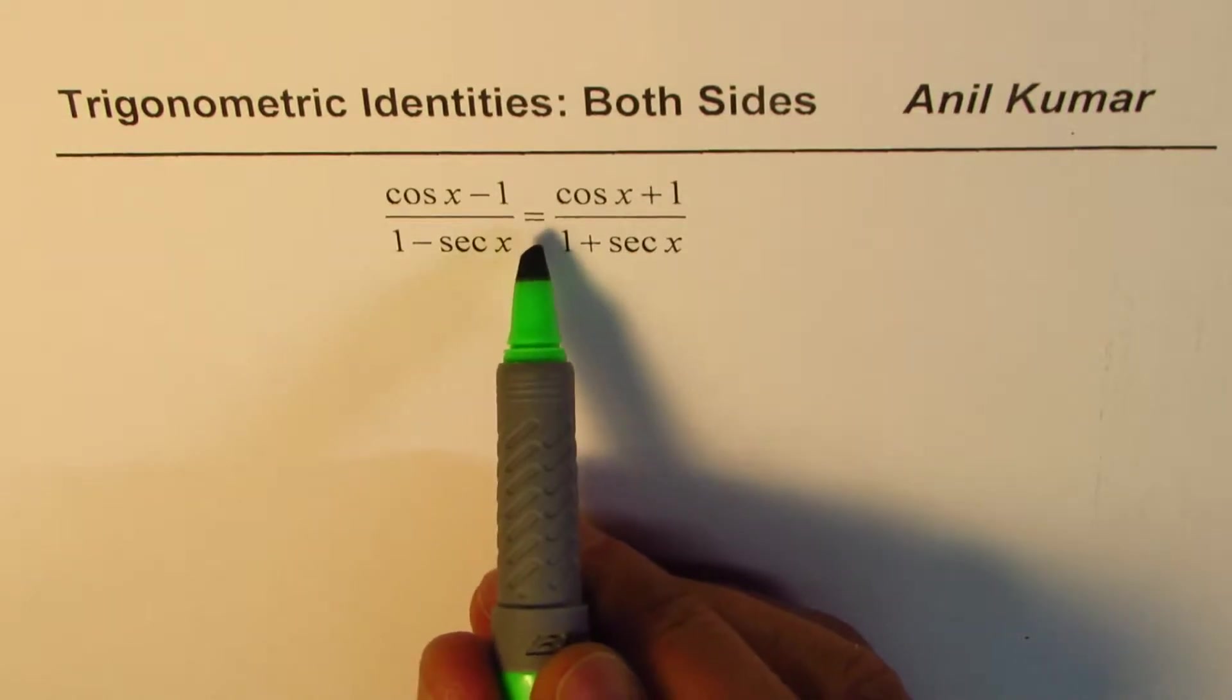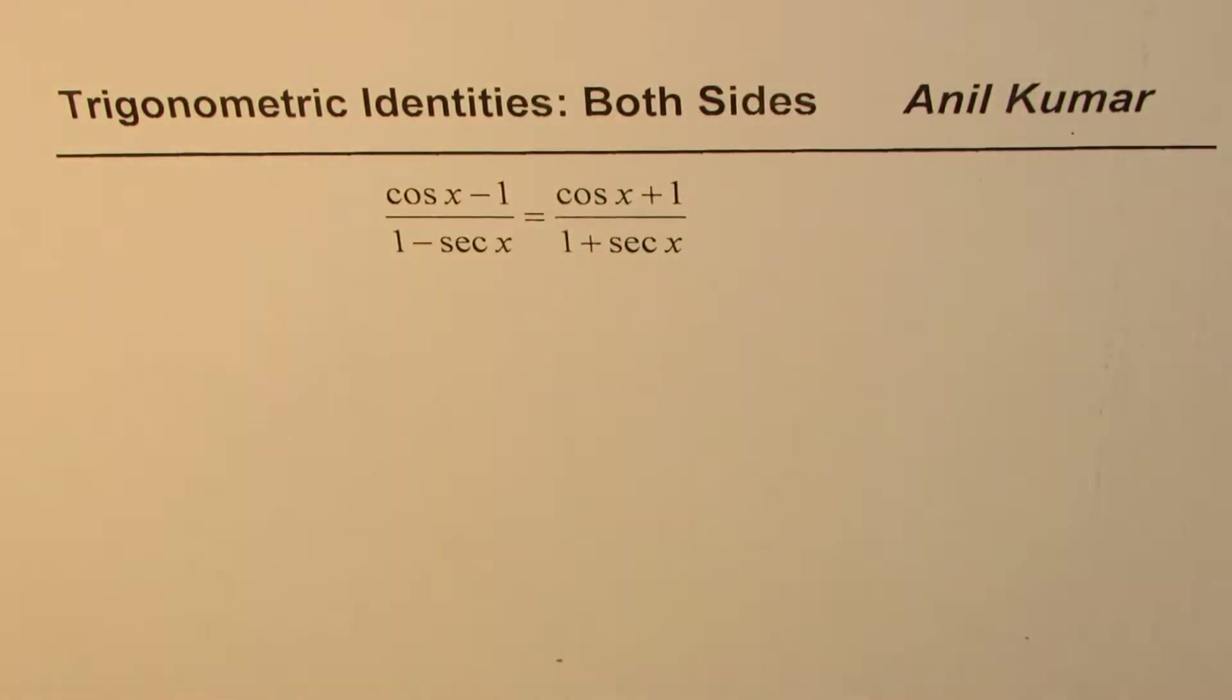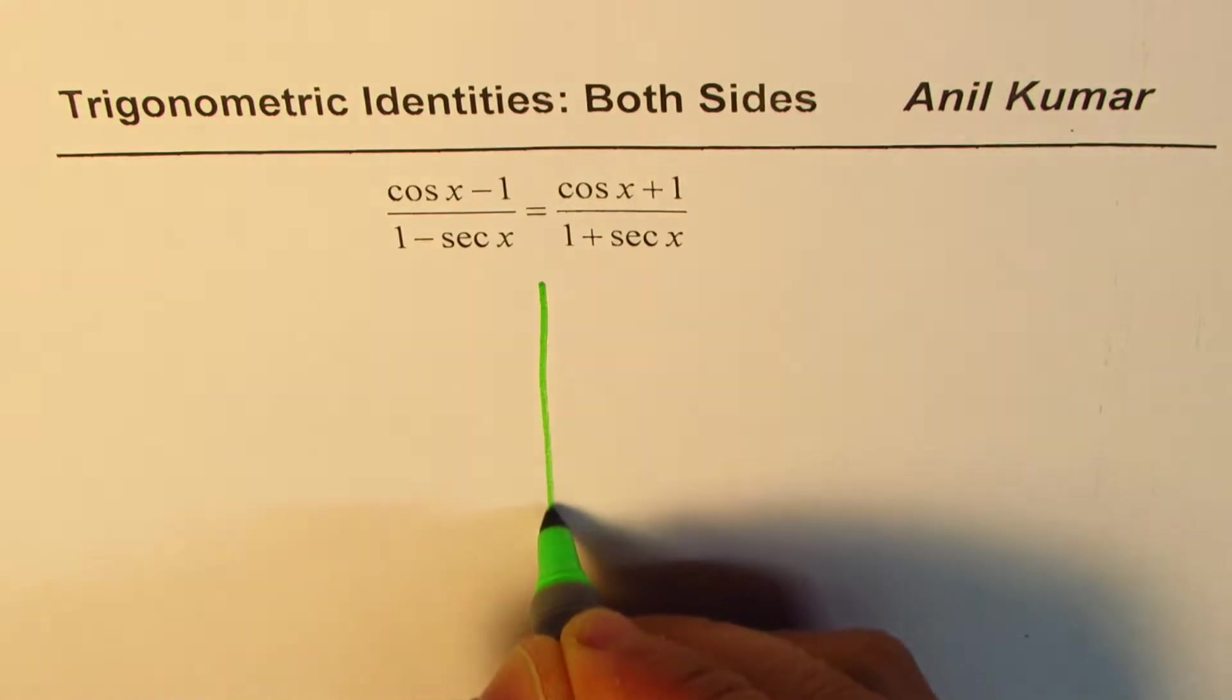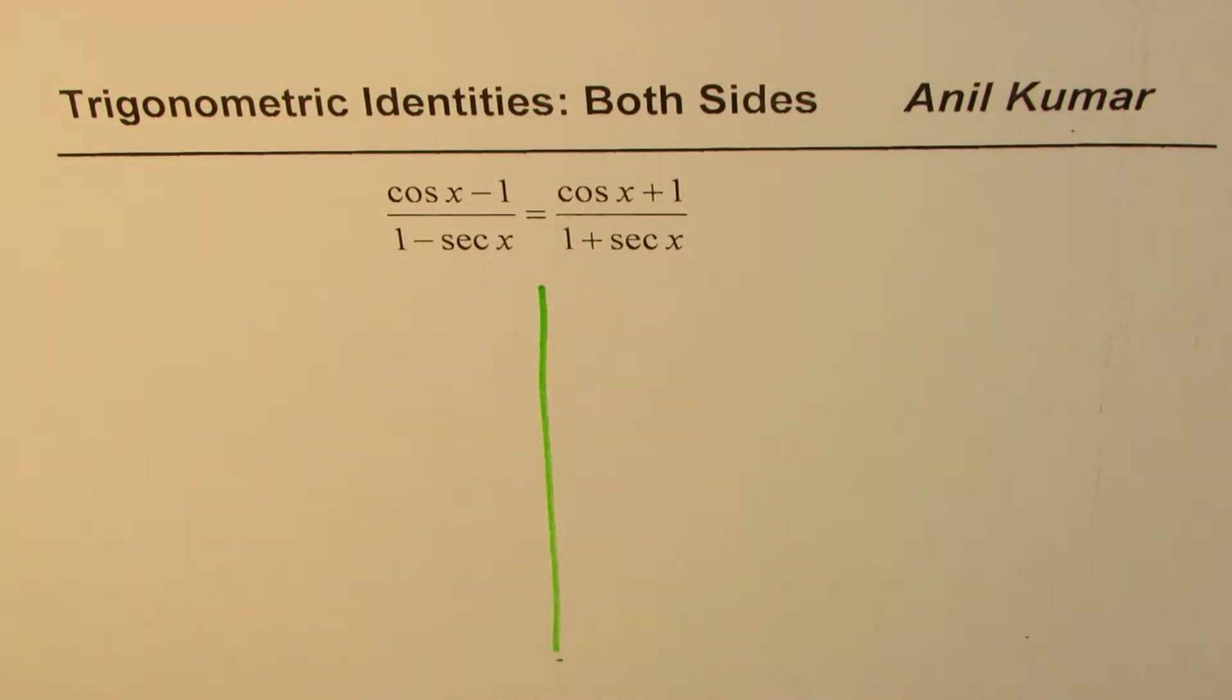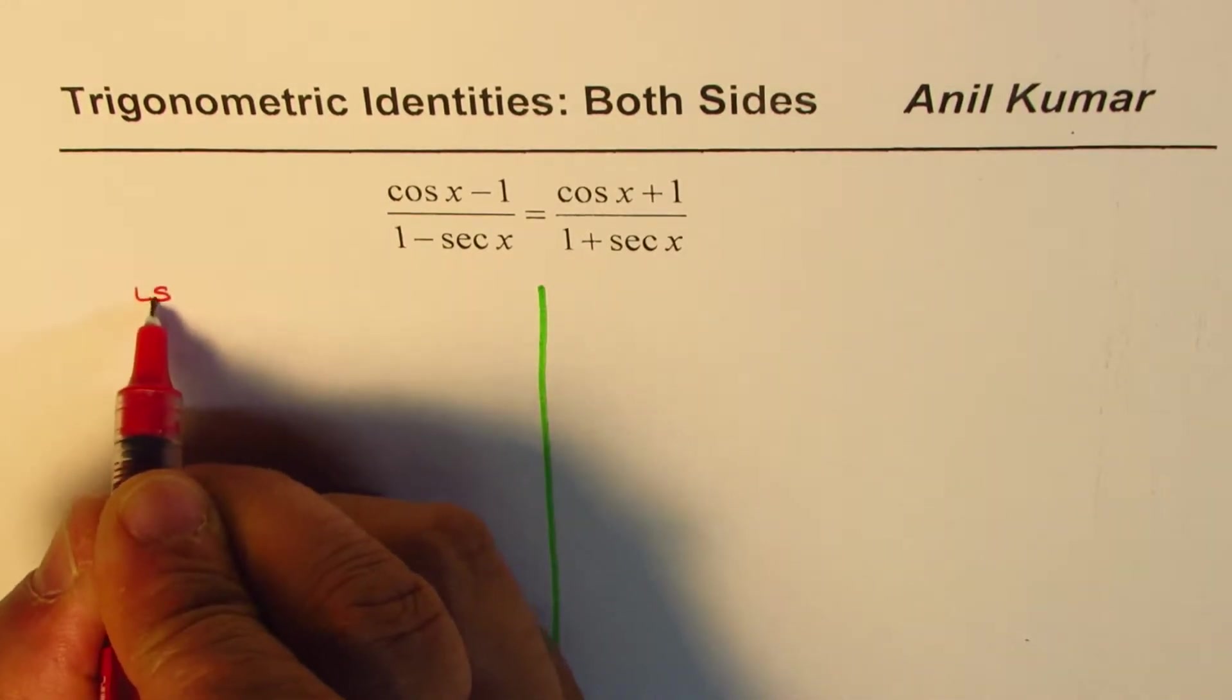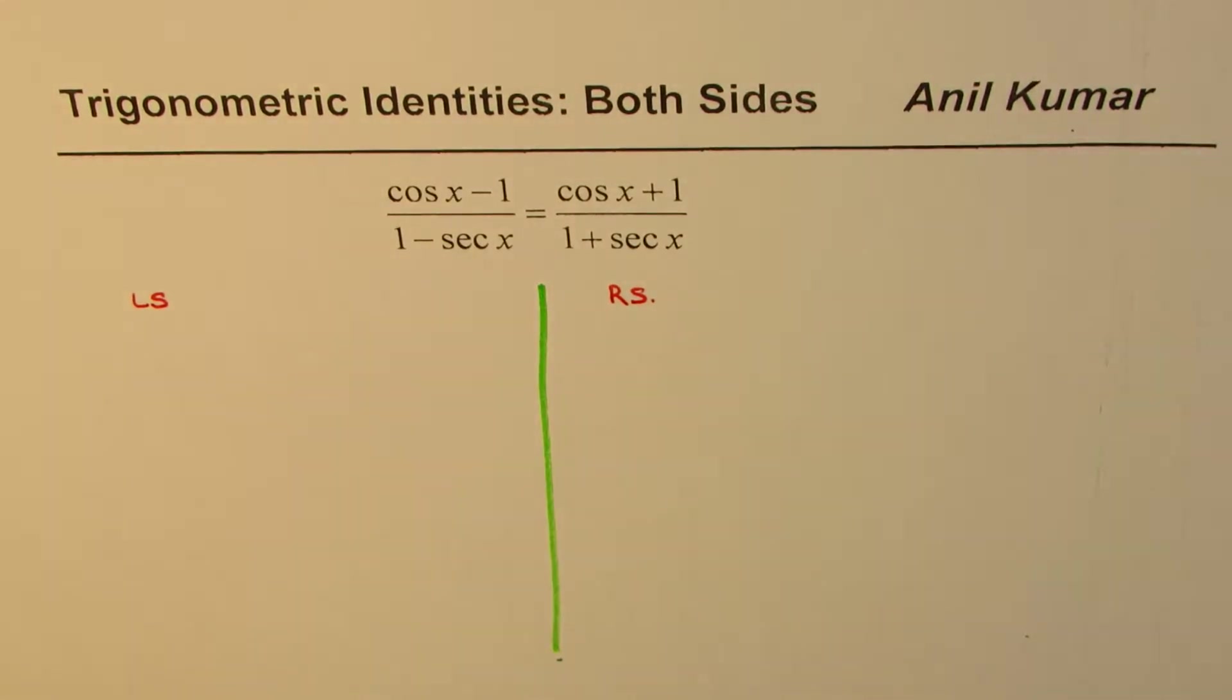In such an example, what I will do is solve both the left side as well as the right side. So I'm dividing my page accordingly - this is my left side and that is my right side. Let's begin from the left hand side.